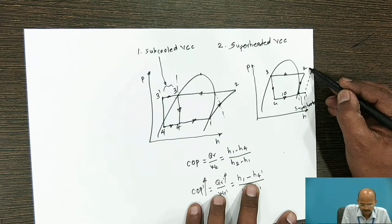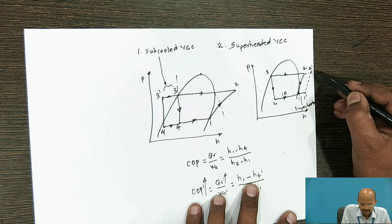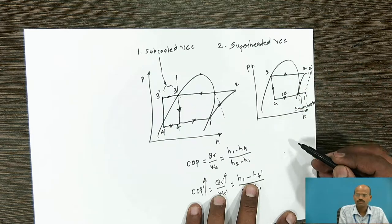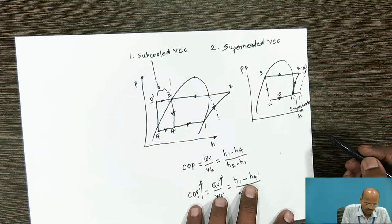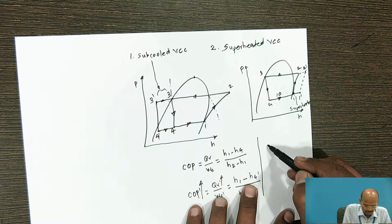This 1 dash will enter into the compressor. There will be compression condensation from 1 dash to 2 dash and 2 dash to 3 will be actual condensation. So what will be its effect on the COP?